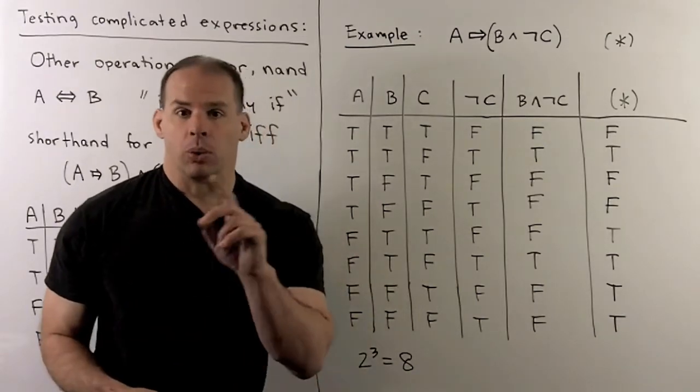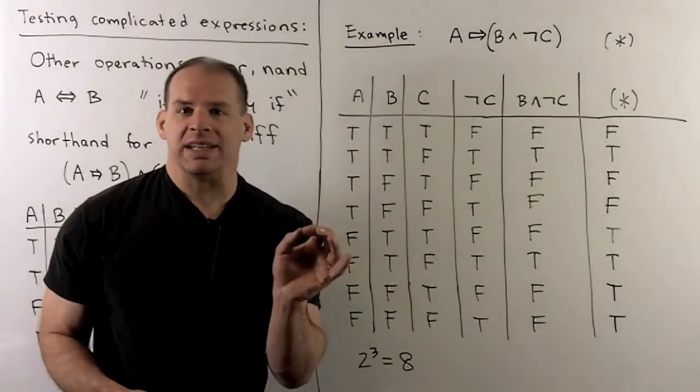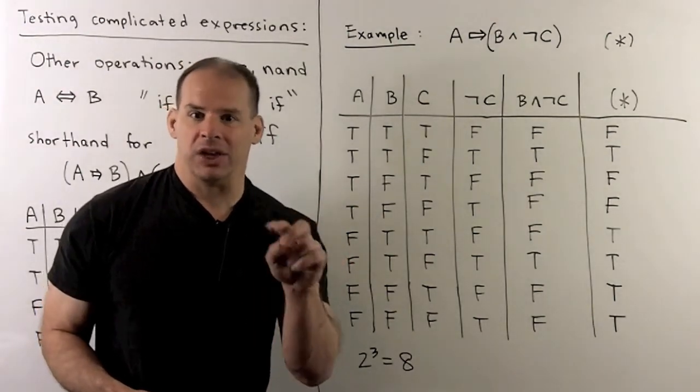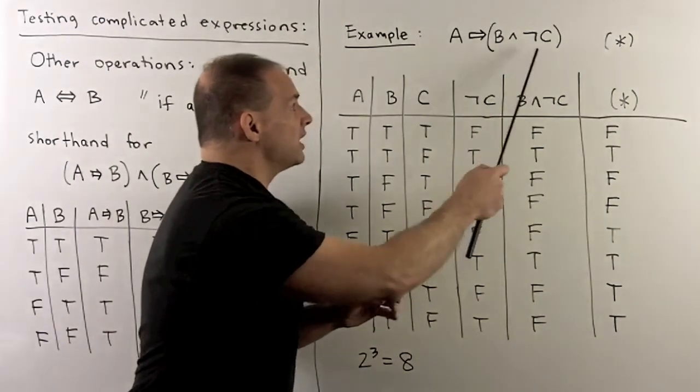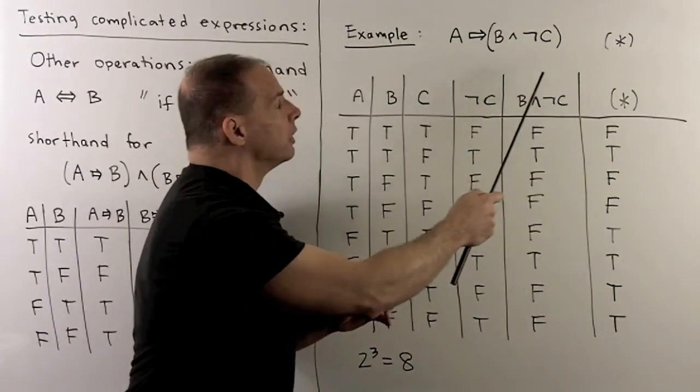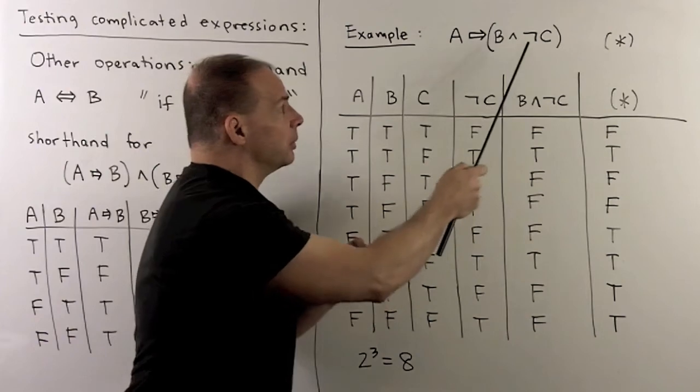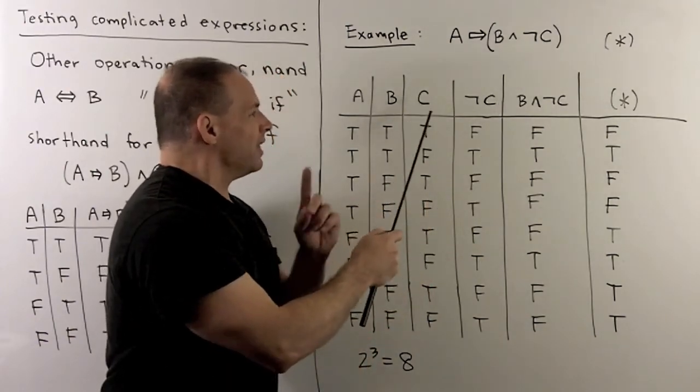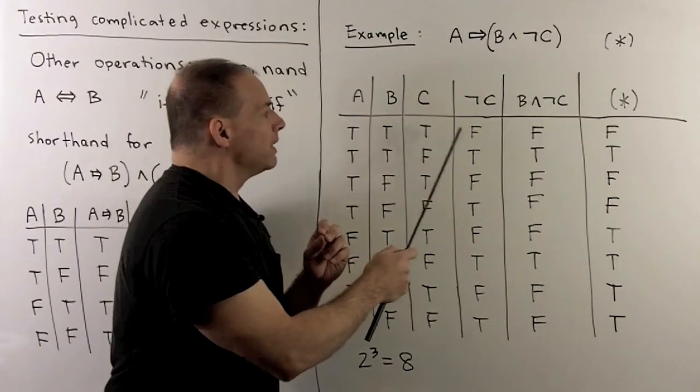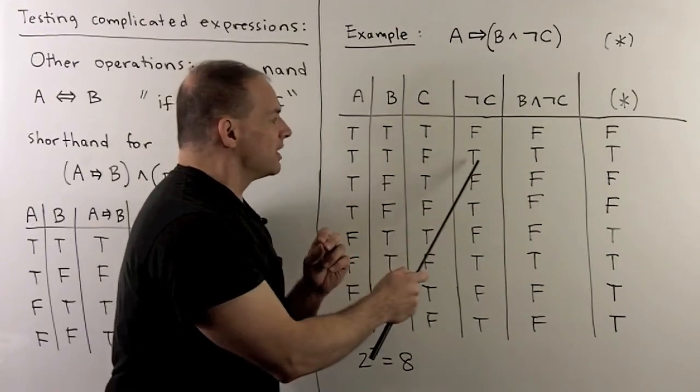Now, if I want to work, same basic idea as with multiplication and addition. We're going to start on the inside of the parentheses and work our way out. So, the first thing I need to do is to compute not C. So, we look at the column for C. Then, I'm just going to take trues, send them to false, false, send them to trues.